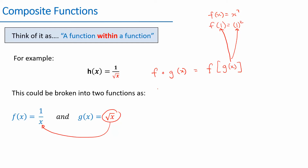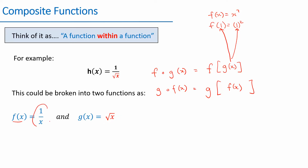If you wrote it the other way around — if you said g of f of X — what that means is in your function g, you're replacing all the X's with f of X. So g of f of X means I'm going to take f of X and substitute it into g. So instead of root of X, it'll be root of 1 on X.